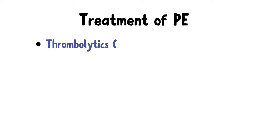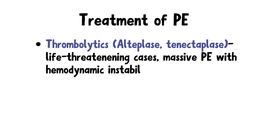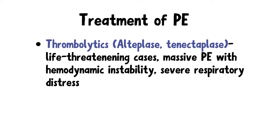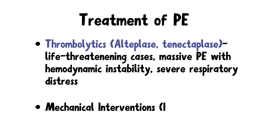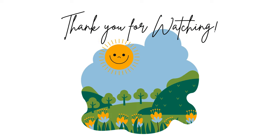Thrombolytics such as alteplase and tenecteplase can be used to dissolve the clot rapidly, especially in life-threatening cases. They are usually reserved for massive pulmonary embolism with hemodynamic instability or severe respiratory distress. Mechanical interventions such as IVC filters can be considered in patients with recurrent pulmonary emboli despite anticoagulation, or in patients who cannot receive anticoagulation due to bleeding risks. The point of this filter is to catch the clots before they reach the lungs. That brings us to the end of today's video — thanks for watching and have a great day.